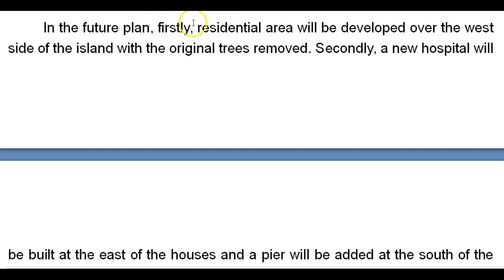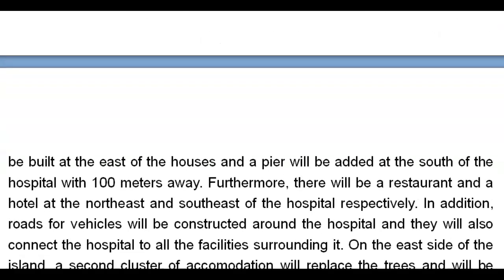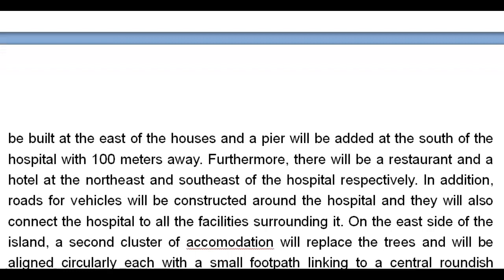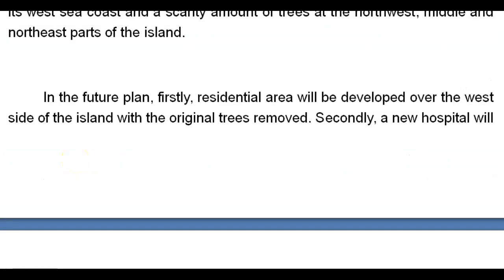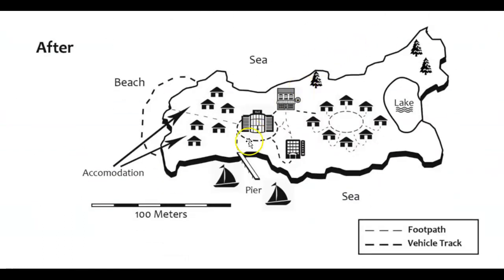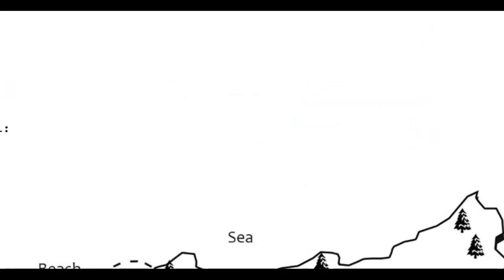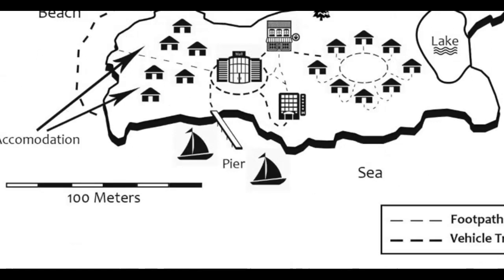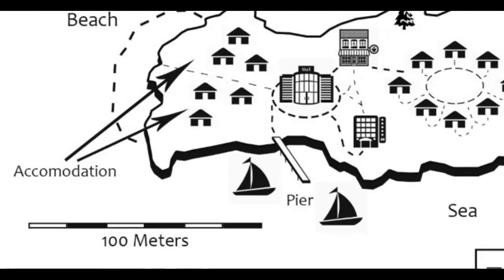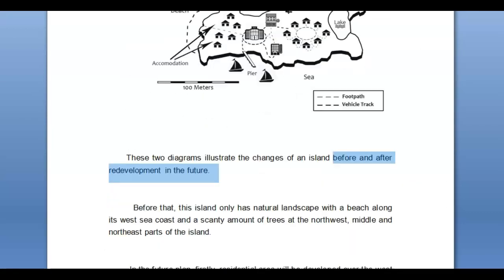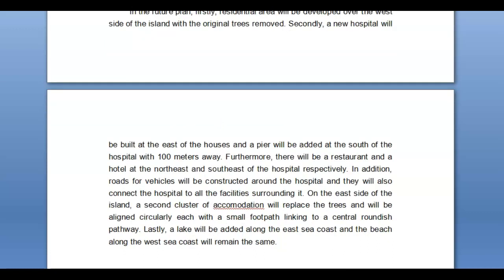Firstly, you need an article: 'a residential area will be developed over the west side of the island with the original trees removed.' Secondly, 'a new hospital will be built at the east of the houses and a pier will be added at the south of the hospital, 100 meters away' — get rid of 'the whiff.' I don't know where you saw 'hospital' — when I enlarged the image I believe this is a mall, this is a hotel, and this is a restaurant.